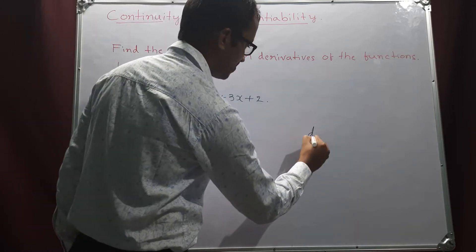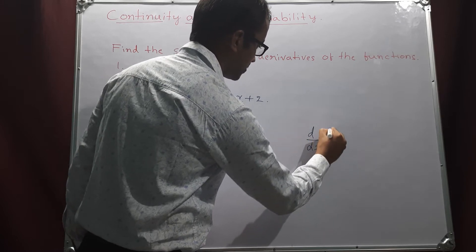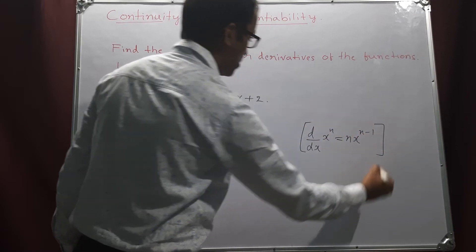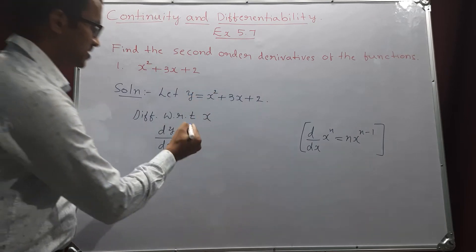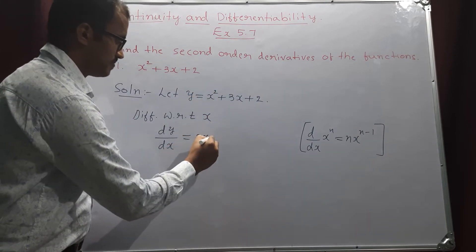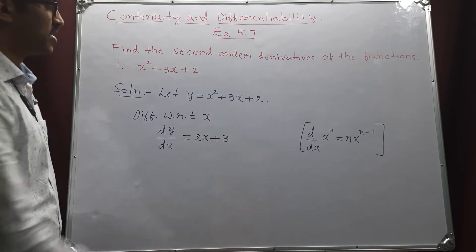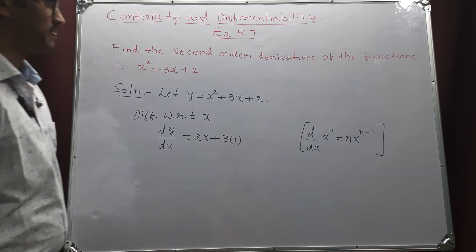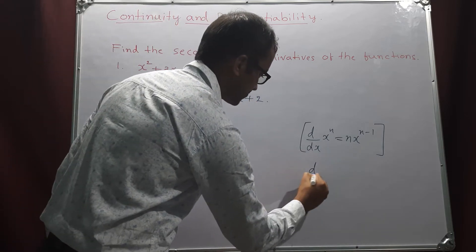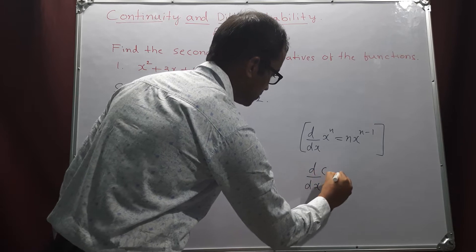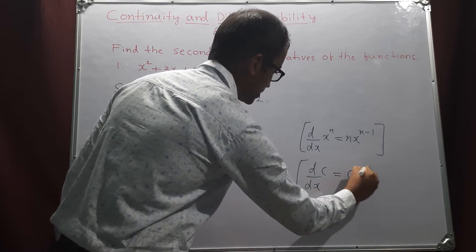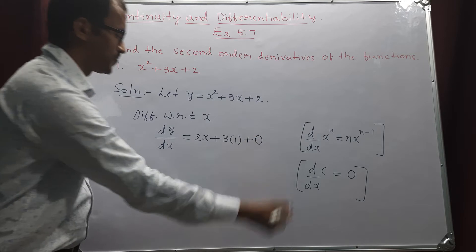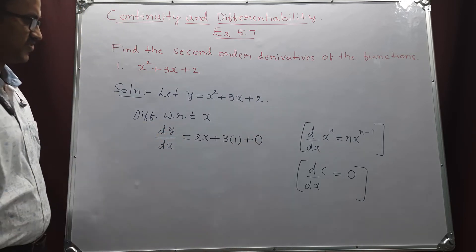We know that differentiation of x power n is n into x power n minus 1. So, differentiation of x squared becomes 2x, plus 3 is a constant so differentiation of x gives 1, plus differentiation of the constant 2 gives 0. This is the first order derivative.